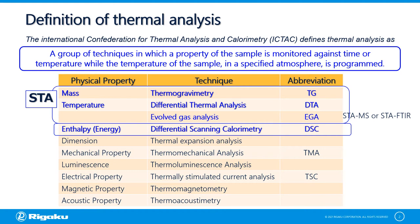For quantifying the energy in a reaction, the differential scanning calorimetry or DSC method is utilized. On the other hand, evolved gas analysis or EGA is a simultaneous technique for evaluating the kind and amount of volatile products released from a material.